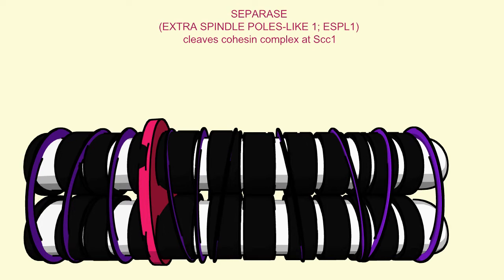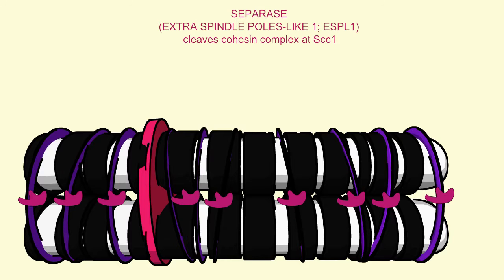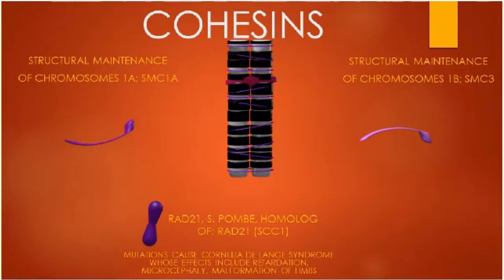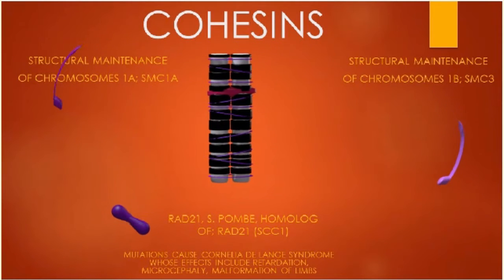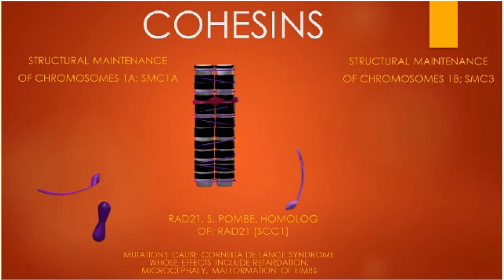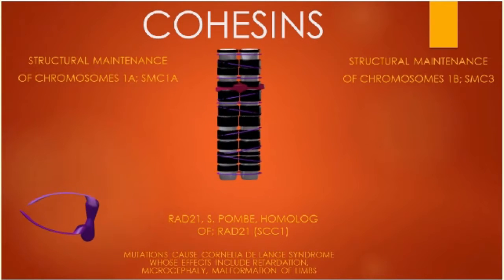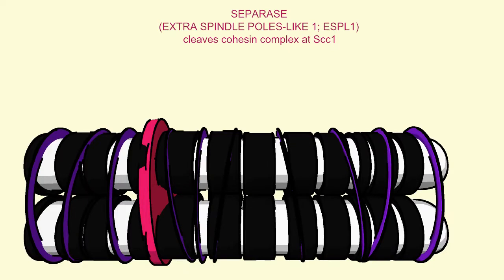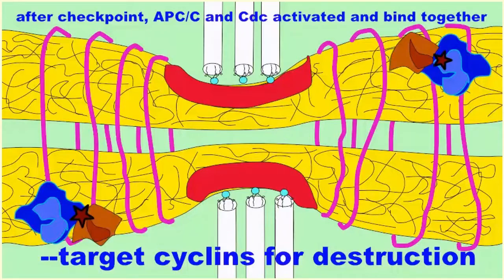Anaphase begins when the cohesin proteins, which surround sister chromatids and hold them together, are broken by a separase enzyme — a type of protease — which breaks one of the subunits of the cohesin complex. Once freed from the cohesins, the sister chromatids can be pulled to the opposite poles of the cell.